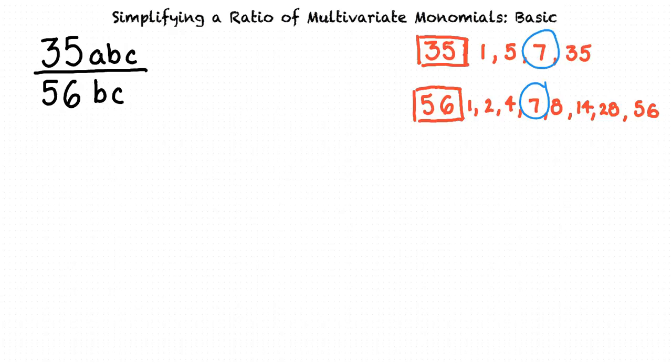So we can break apart our problem into 7 times 5 times a times b times c over 7 times 8 times b times c. Next, we identify common variables found in both the numerator and the denominator. What common variables do you see in this problem? There is a 7, b, and c in the top and bottom of this expression.